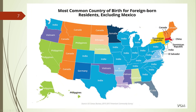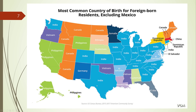If we look at this map, it tells us that immigrants to the U.S. come from many different countries — from India, Canada, Philippines, Ethiopia, Vietnam, El Salvador, Dominican Republic, and China. For example, in Texas, the most dominant immigrant group is from India.